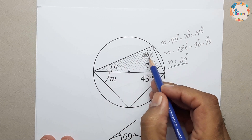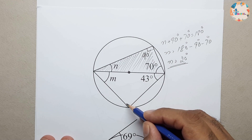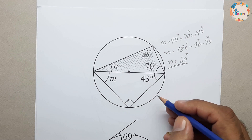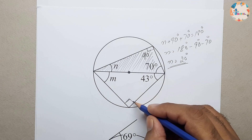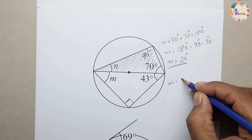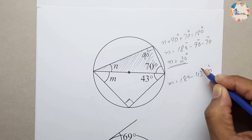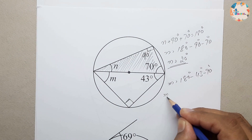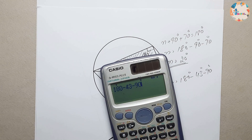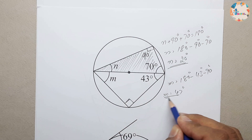Similarly, the same rule applies to the lower triangle. This angle will also be 90 degrees by the rule that the angle in a semicircle is a right angle. So m = 180 − 43 − 90 = 47 degrees.